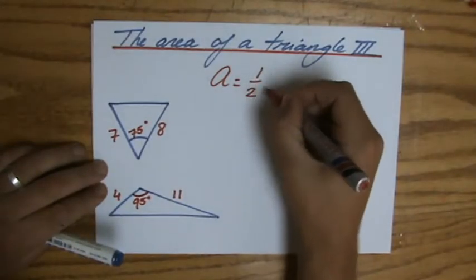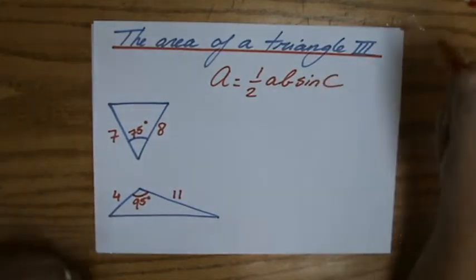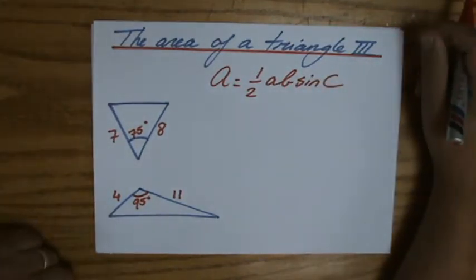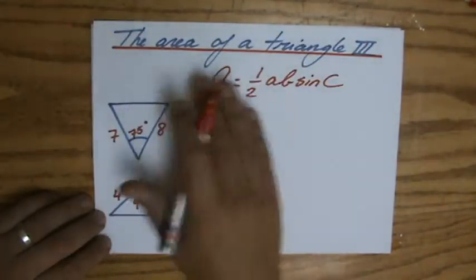But we found a different formula: half AB sine C, which will always give me the area of a triangle. I've shown you in the previous videos why it looks the way it does.